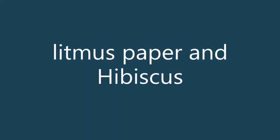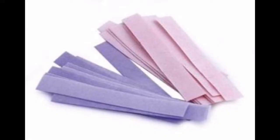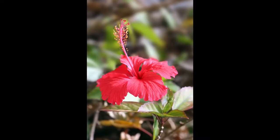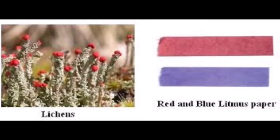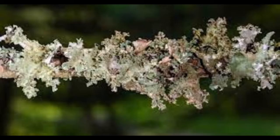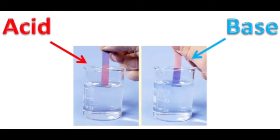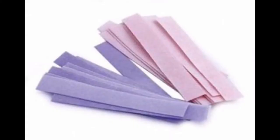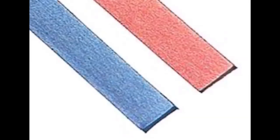We have seen one natural indicator which is turmeric solution, and we made turmeric paper. Now we have two other natural indicators — one is litmus and another is china rose, which is also called hibiscus. Litmus is a natural dye and the most commonly used natural indicator. It is extracted from lichens. It has a mauve purple color in distilled water. When added to an acidic solution it turns red, and when added to a basic solution it turns blue. It is available as a solution or in the form of strips of paper known as litmus paper — generally available as red and blue litmus paper.